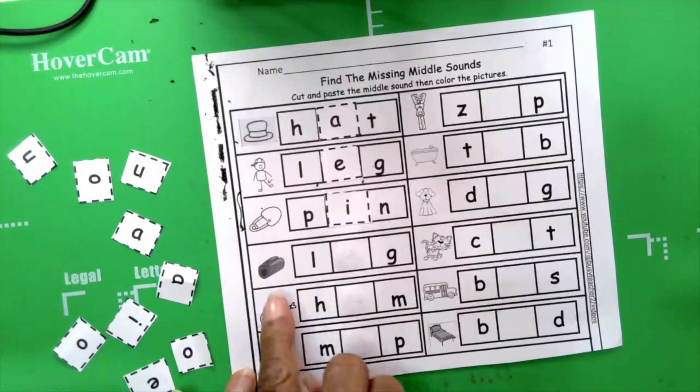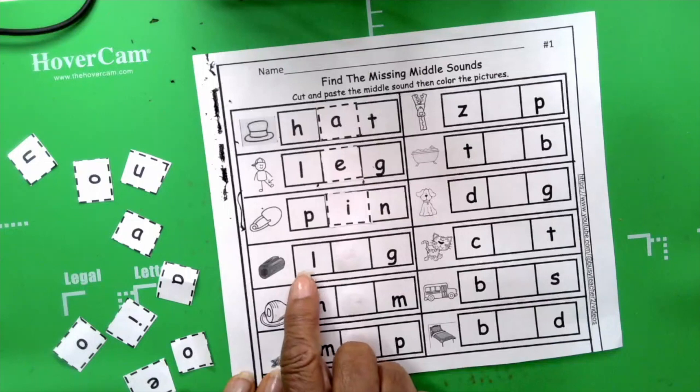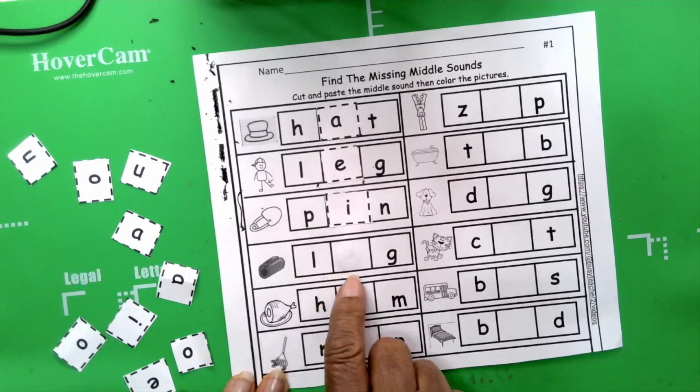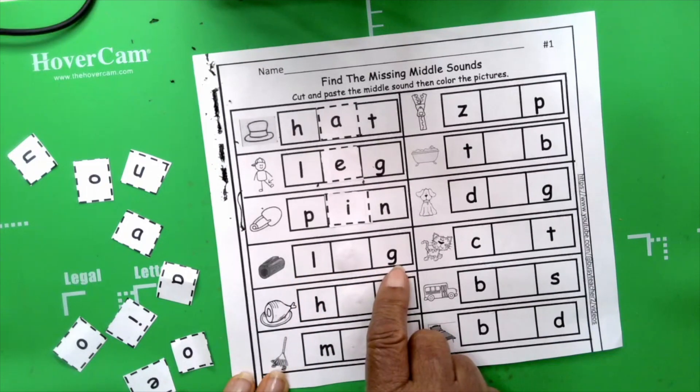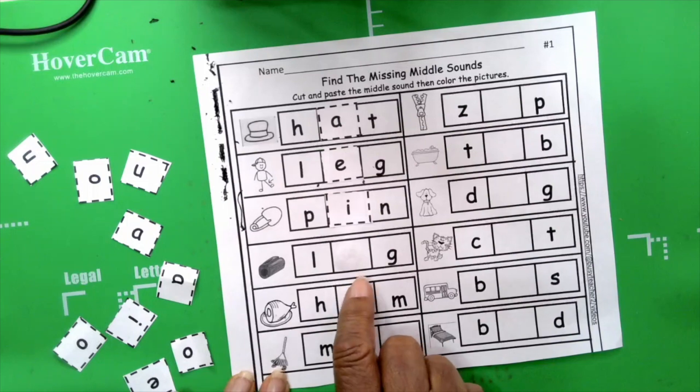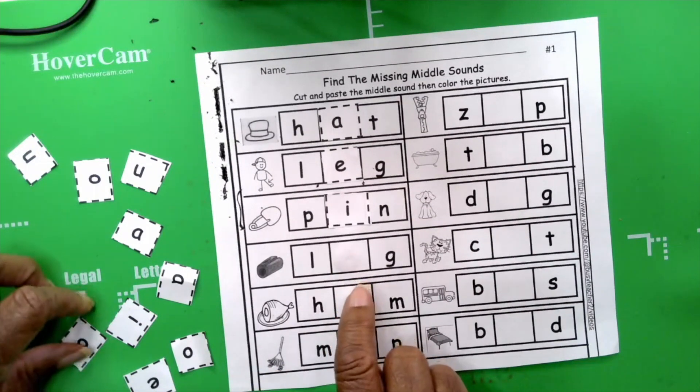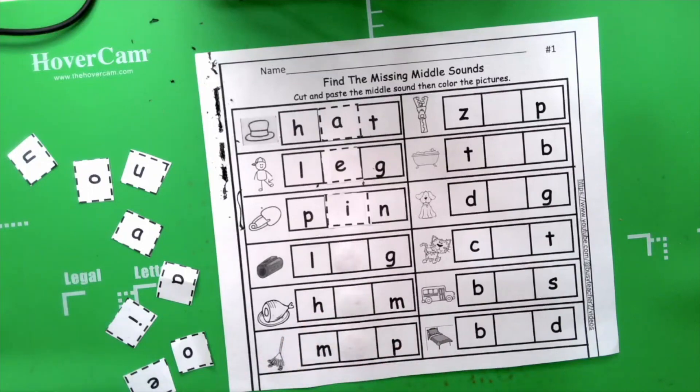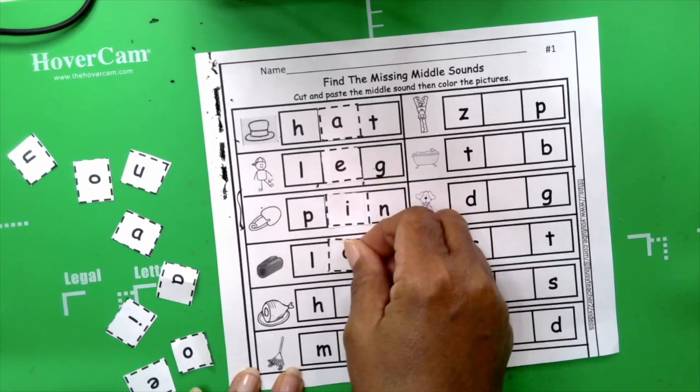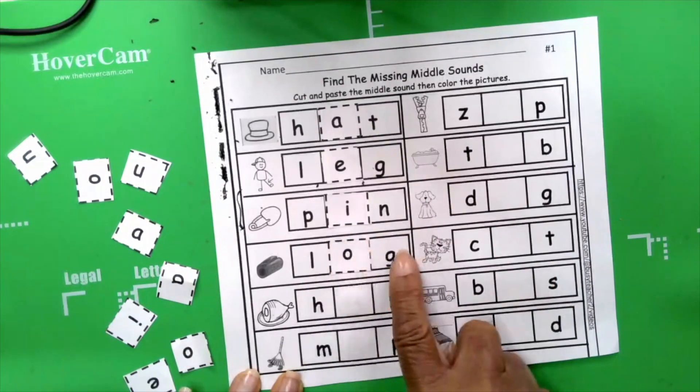The next word is picture. It's log. Log. L. A. G. Your turn. L. A. G. We're looking for ah. Ah. What letter makes that sound. Oh yes. Oh yes. Oh. Log. L. O. G.